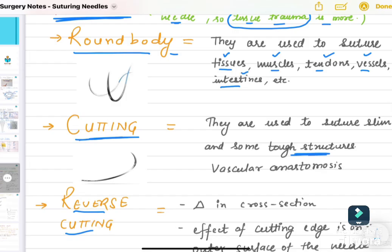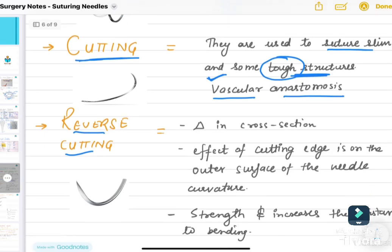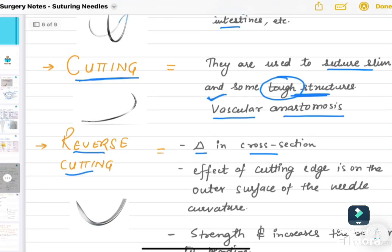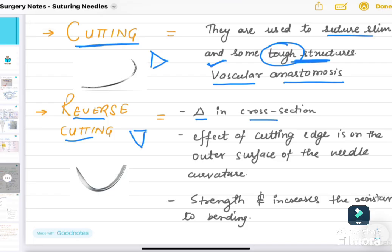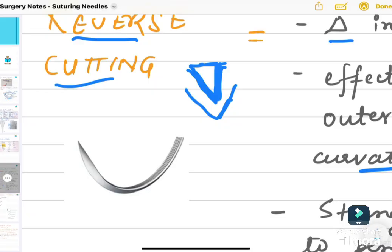Second is cutting. They are used to suture skin and tough structures. Cutting needles are for tough things that need cutting. The only difference between cutting and reverse cutting is that in reverse cutting the triangle is inverted. The effect of the cutting edge is on the outer surface of the needle curvature. This geometry provides strength and increases the resistance to bending of the needle.